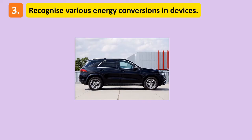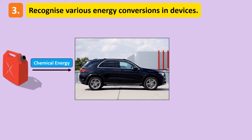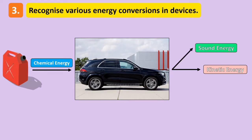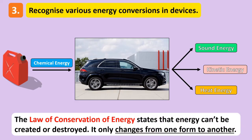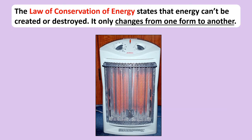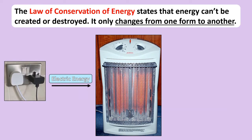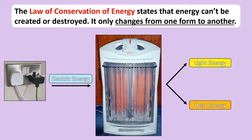Take this car for example. Fuel, which stores chemical energy, is ignited and released inside the engine. That chemical energy is then converted into kinetic energy, which we see when the car is moving, sound energy from the roar of the engine, and heat energy when the engine heats up. This supports the law of conservation of energy, which states that we can't create or destroy energy — we can only convert it from one form into another. Another energy conversion takes place in an electric heater, where electric energy from the plug in the wall is converted into both heat energy and light energy, again proving no energy has been created or destroyed.